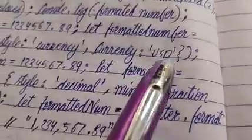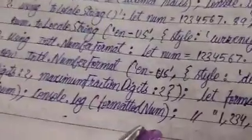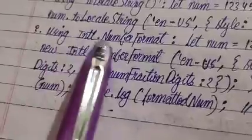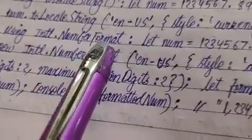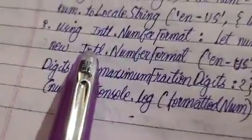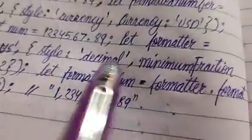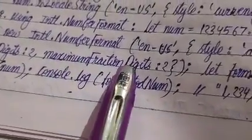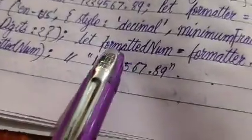Another method is Intl.NumberFormat. We're creating a format using Intl.NumberFormat with style set to decimal, minimumFractionDigits set to 2, and maximumFractionDigits set to 2.